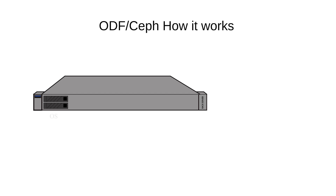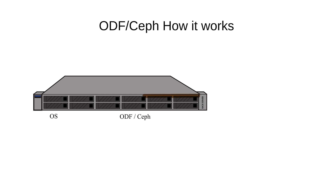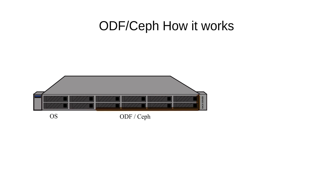The first two drives are typically used for the operating system, so in our case CoreOS. Then the remaining drives will be managed by the Ceph deployed by ODF. Even though these Ceph-managed drives can be spinners for use cases such as backup stores that don't require high IO, for the best performance and most use cases you want to use flash storage and match it with adequate networking.